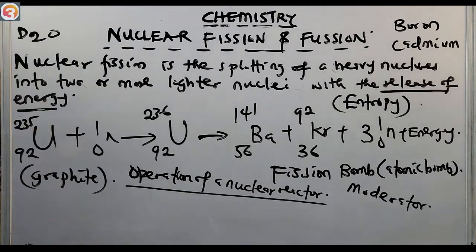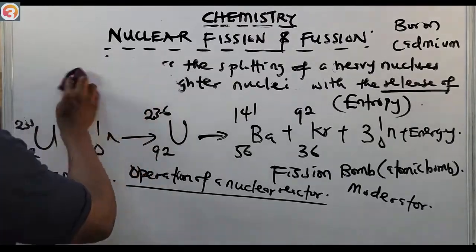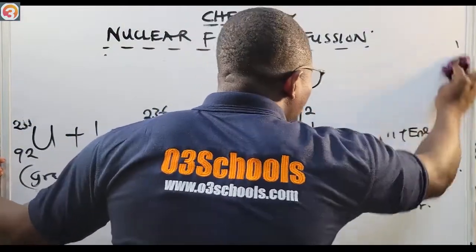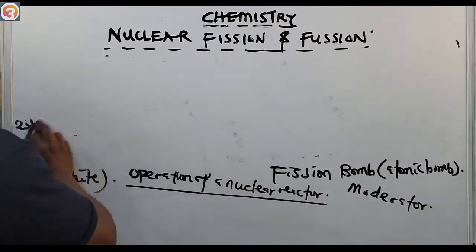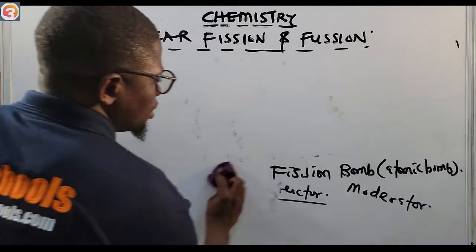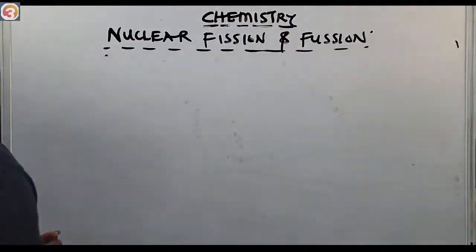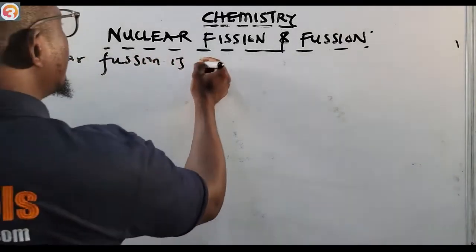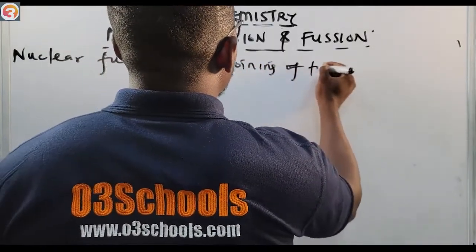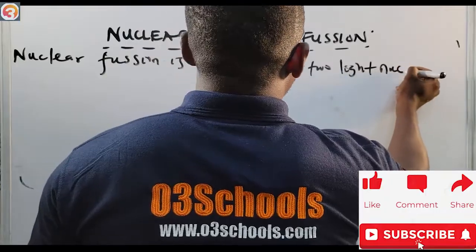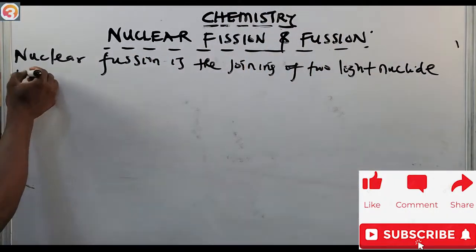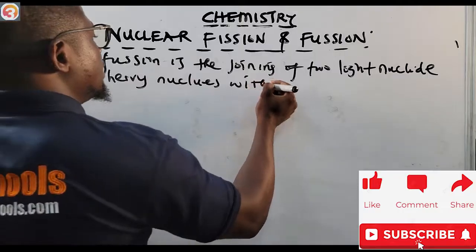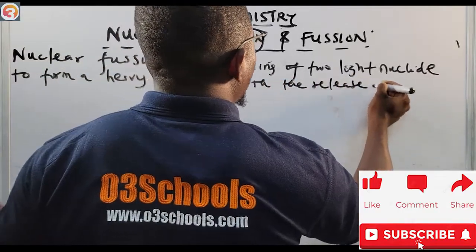Now let's talk about nuclear fusion. We said fission is splitting, so fusion is the opposite — it is the joining or bringing together of two light nuclei to form a heavy nucleus with the release of energy. Nuclear fusion is the joining of two light nuclides to form a heavy nucleus with the release of energy.